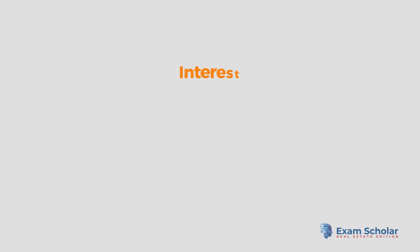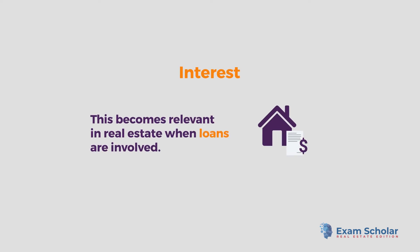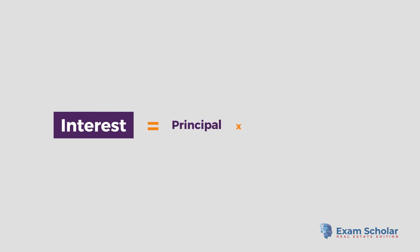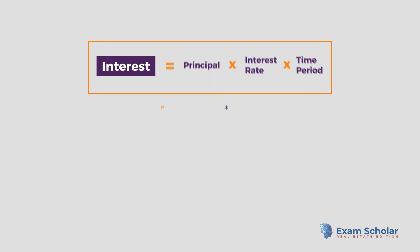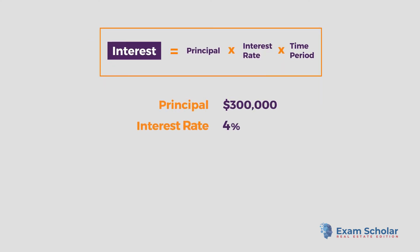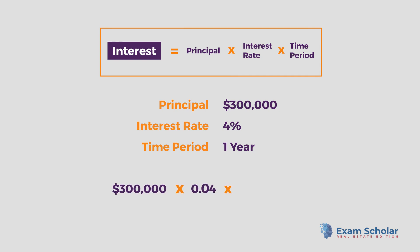The third formula you need to know is how to calculate interest. This becomes relevant in real estate when loans are involved. A simple interest calculation is the principal multiplied by the interest rate multiplied by the time period. For example, the interest on a $300,000 loan at a 4% interest rate over one year would be calculated by multiplying $300,000 by .04 by 1, which equals $12,000.